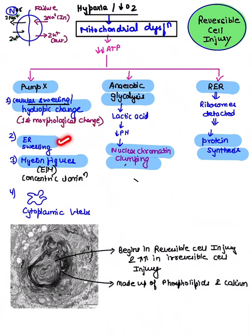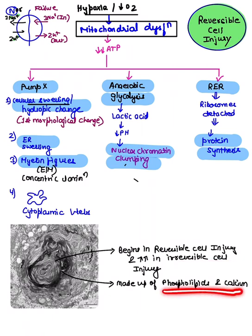Endoplasmic reticulum swelling is also seen, along with myelin figures. Myelin figures show concentric lamination — seen in both reversible and irreversible cell injury — and are made up of phospholipid and calcium. With absence of oxygen, anaerobic glycolysis produces lactic acid, which causes nuclear chromatin clumping. Ribosomes detach from the rough ER, causing decreased protein synthesis.